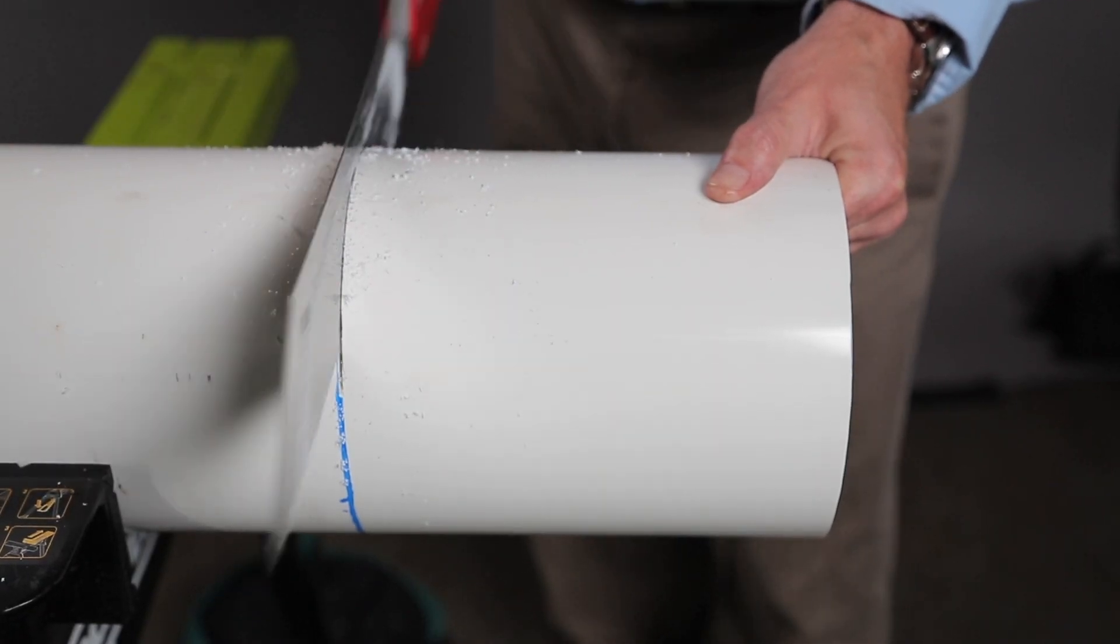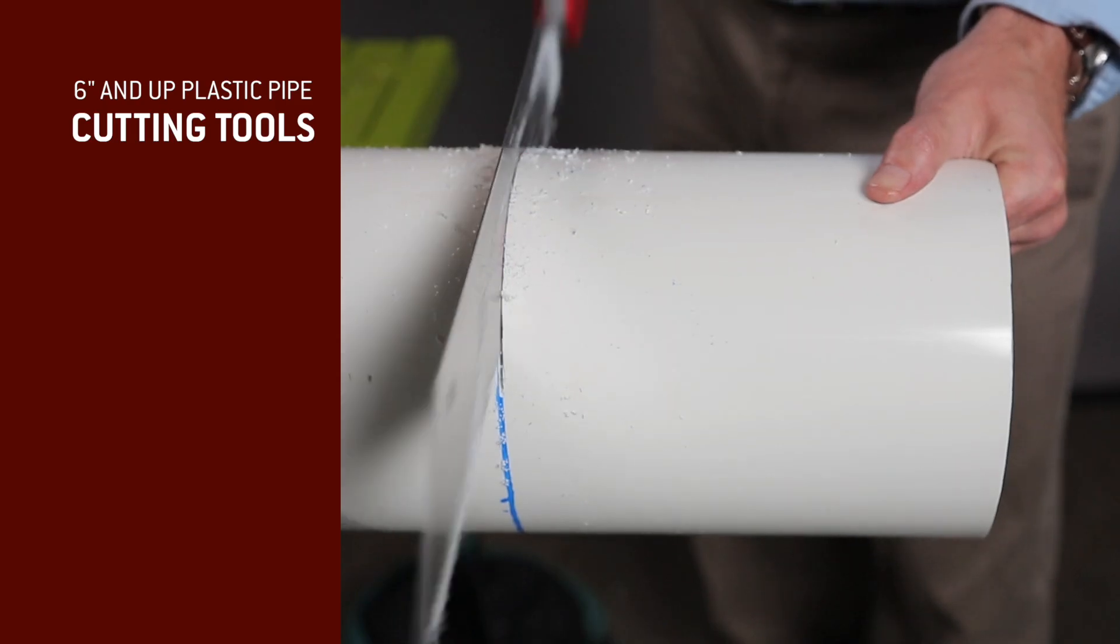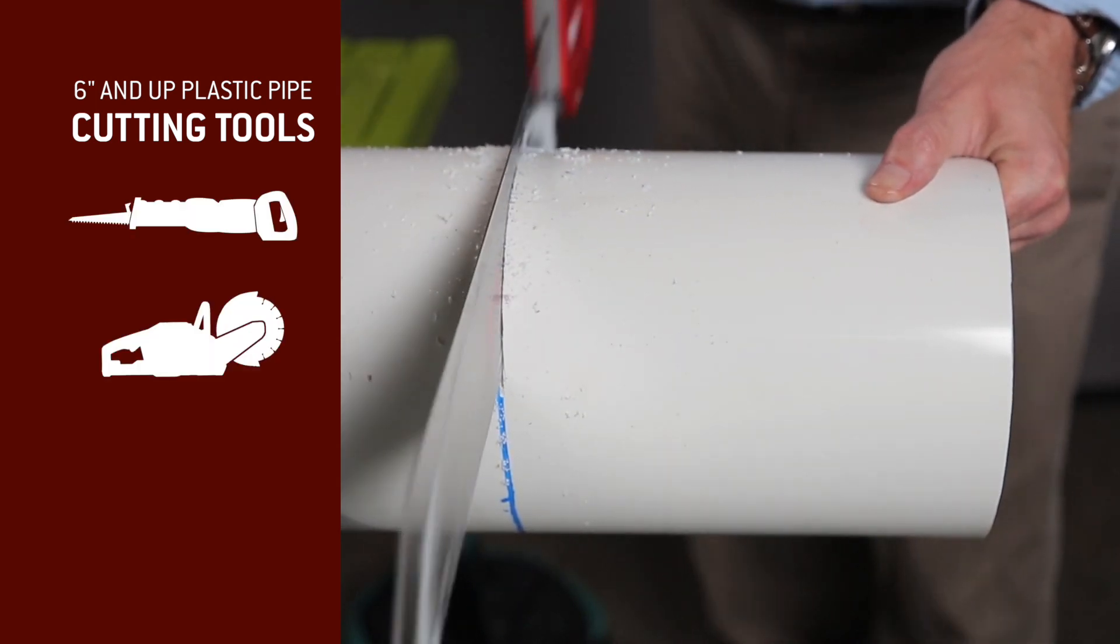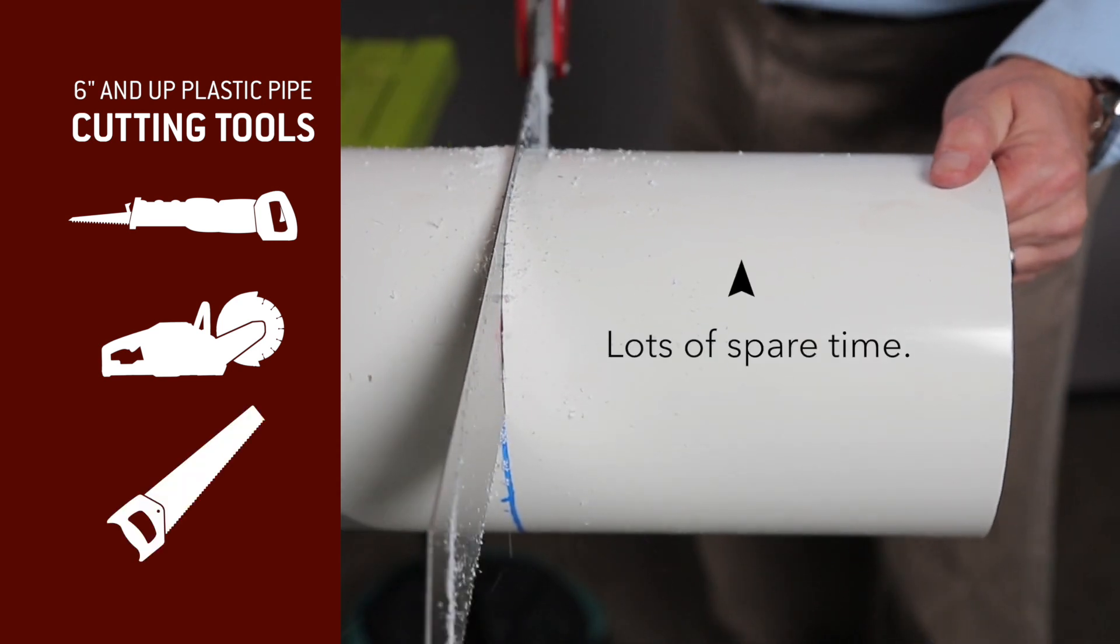There are a lot of ways to cut plastic pipe. Whatever tool you use, the most important thing is to get a square cut. For pipe this size, acceptable tools include reciprocating saw, mechanical cutoff with carbide tip blade, or if you've got a lot of spare time, a hand saw.